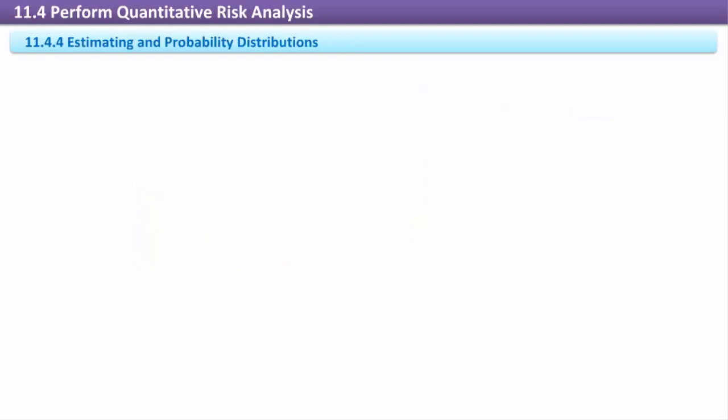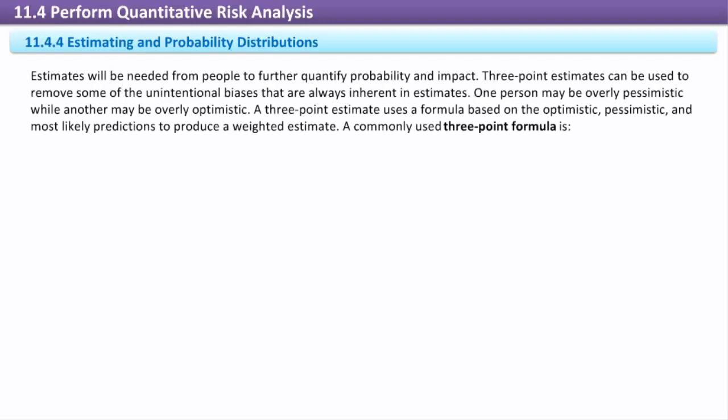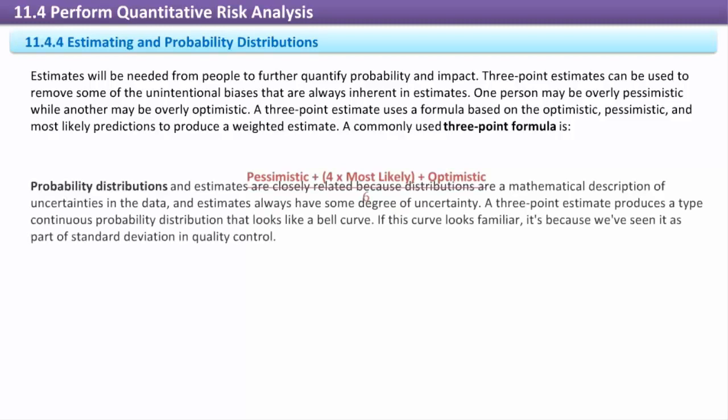Estimating and probability distributions. Estimates will be needed from people to further quantify probability and impact. Three-point estimates can be used to remove some of the unintentional biases that are always inherent in estimates. One person may be really pessimistic while another may be really optimistic. A three-point estimate uses a formula based on the optimistic, pessimistic, and most likely predictions to produce a weighted estimate. A commonly used three-point formula is pessimistic plus 4 multiplied by most likely plus optimistic divided by 6.